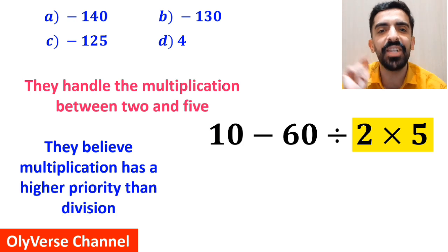In the next step, first they handle the multiplication between 2 and 5 because they believe multiplication has a higher priority than division. So they write this expression as 10 minus 60 divided by 10.